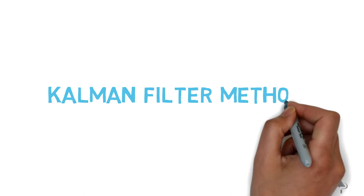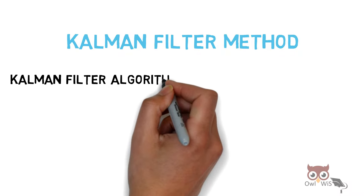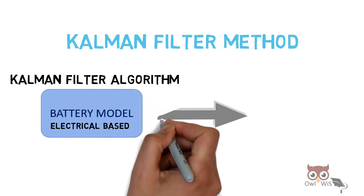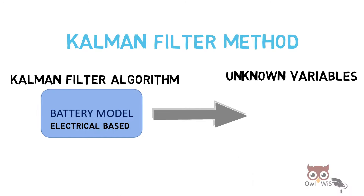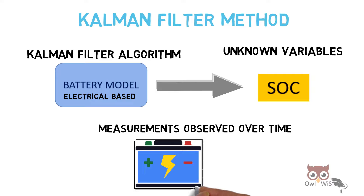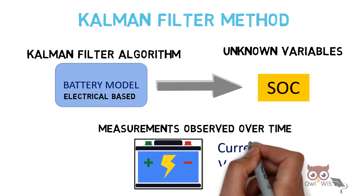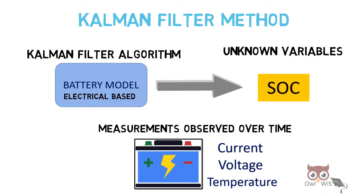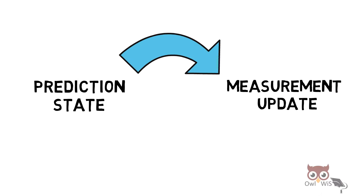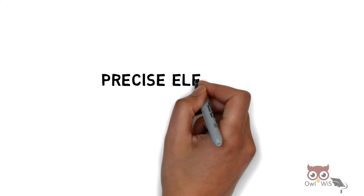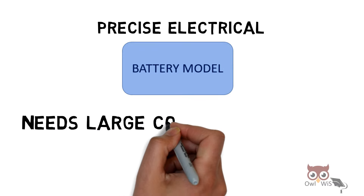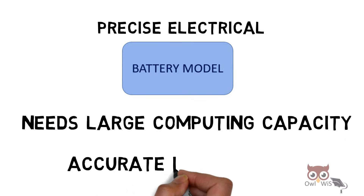Next is the Kalman filter method. The Kalman filter algorithm uses an electrical-based battery model in order to predict unknown variables — in our case, the state of charge (SOC) — based on measurements observed over time on the battery, such as current, voltage, and temperature. This method uses an algorithm with two steps: a prediction state and a measurement update, which are repeated over time in a closed-loop fashion. This method requires a precise electrical battery model, larger computing capacity, and accurate initialization.